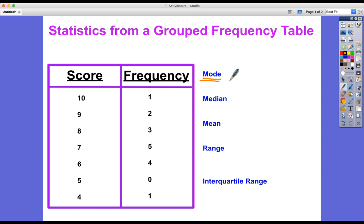So the modal score is equal to seven, the one with the highest frequency. Let's write that down so we're nice and clear. One with the highest frequency.